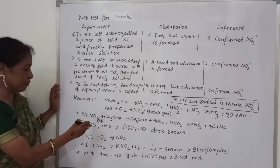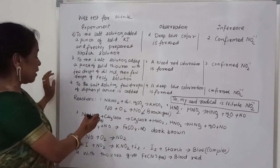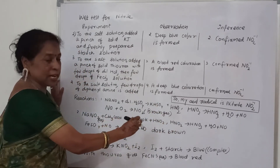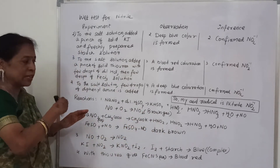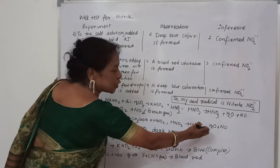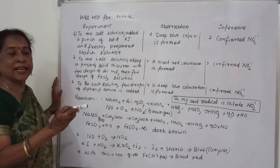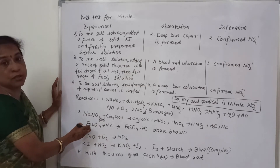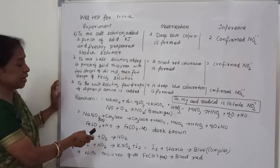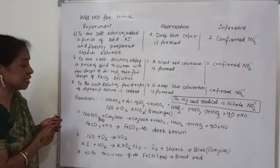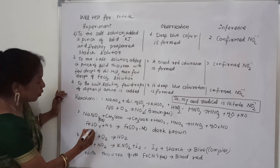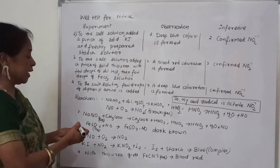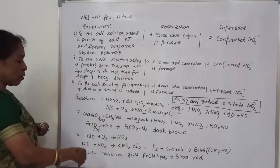Next is the ferrous sulfate reaction. HNO₂ is produced, which breaks down to HNO₃, H₂O, and NO — the same nitric oxide. This nitric oxide combines with ferrous sulfate solution and forms a dark brown complex FeSO₄·NO. This is the ferrous sulfate complex formed in solution, giving the dark brown color.